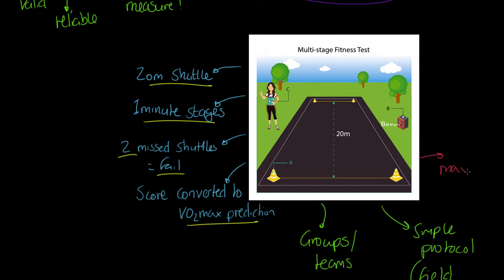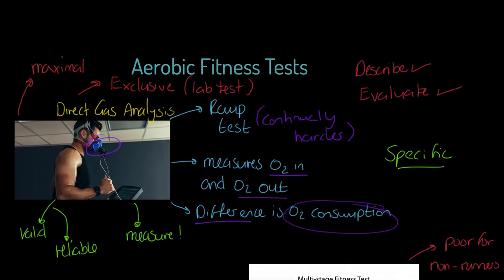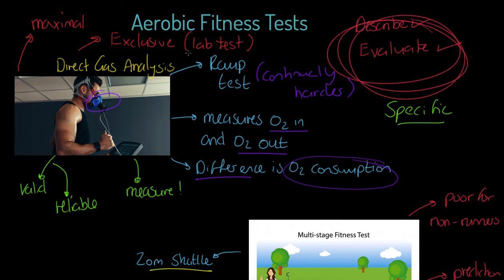Now weaknesses. Guess what? This test is also maximal. That has its motivational issues. Remember that term I used, volitional states, when you give up might be the determining factor. We can also say it's a prediction only, so it's not unlike gas analysis measuring oxygen consumption. The other thing is it's poor for non-runners. So what we mean by this is if you're a swimmer, say, this is going to be less and less valid, although in my experience swimmers actually did quite well in this because of course their cardio fitness tends to be quite good. But there's our strengths and weaknesses. Notice again that we are evaluating. That's really what I want to do in this particular tutorial.